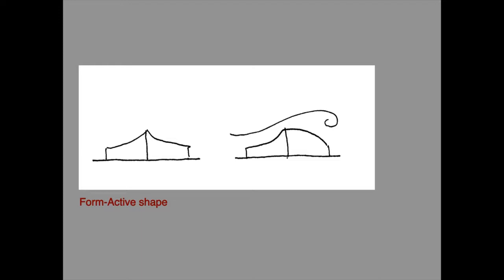The concept of form action — the form active shape — is a powerful one, which allows the possible efficiency of a structure to be judged purely from assessment of its overall form.